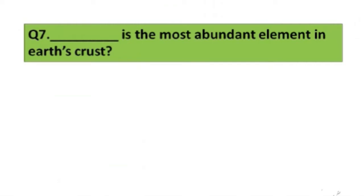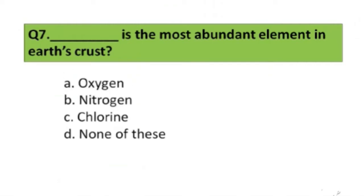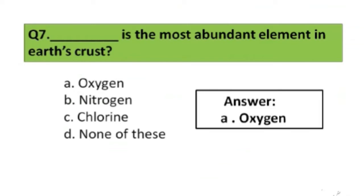Question number 7. The most abundant element in earth's crust is: A. Oxygen, B. Nitrogen, C. Chlorine, D. None of this. The right answer is option A, Oxygen.